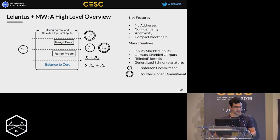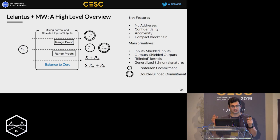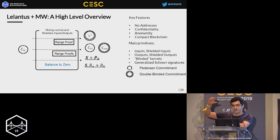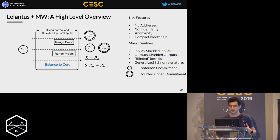A key design insight is that we can combine regular Pedersen commitments and double-blinded commitments into a mixed confidential transaction and still prove it is balanced — spending regular Pedersen coins while outputting double-blinded shielded coins, proving the sum of outputs equals inputs. This results in a new shielded pool on top of the UTxO set, from which users can spend coins anonymously.